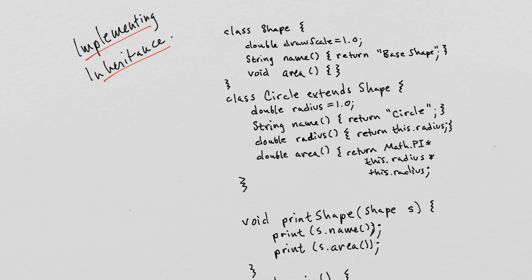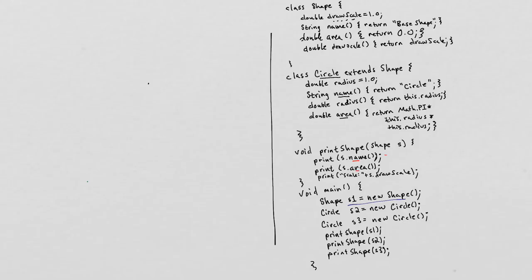Now we're going to look at how to implement inheritance for object-oriented languages, and we want the same sort of thing: we want to be able to know exactly where the code of a method is and exactly where the fields of some particular object are. So I've put the code over to the right and let's think about field access first.